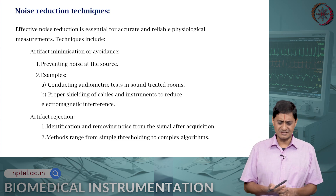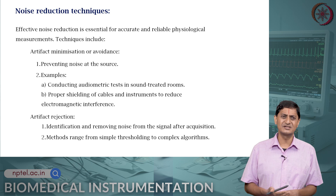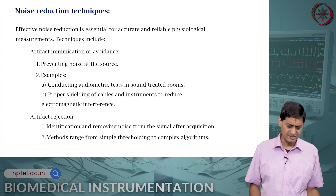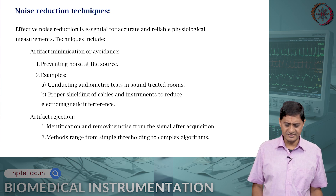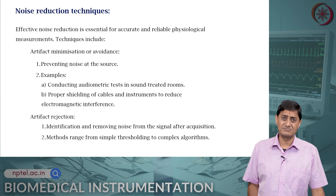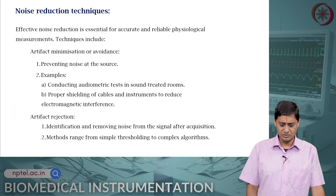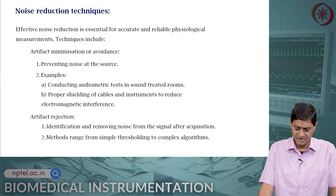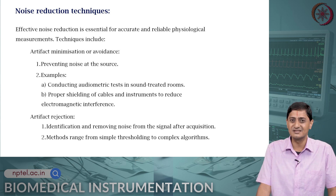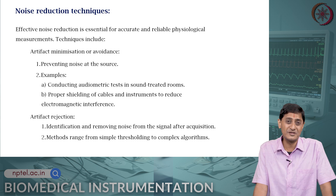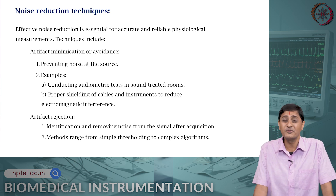Effective noise reduction is essential for accurate and reliable physiological measurements. Techniques used include artifact minimization or avoidance — the first step is to minimize noise at the source. For example, if you are measuring audiometric signals, sound-proof the room so there is no external noise. Proper shielding of cables can help reduce electromagnetic interference. Identify and remove sources of artifacts. For example, eye blink is a common artifact in EEG — you can request the participant not to blink, though it is not always possible. If they do blink, advanced signal processing techniques are needed to remove the eye-blink artifact.